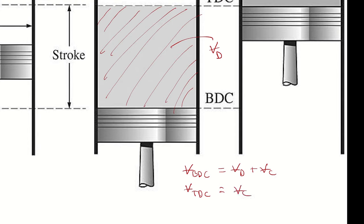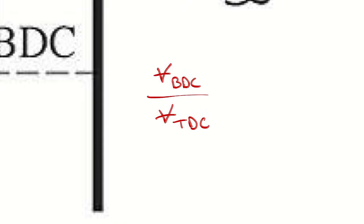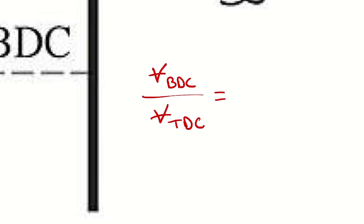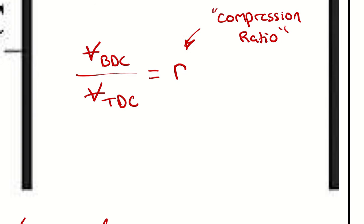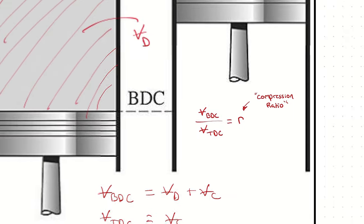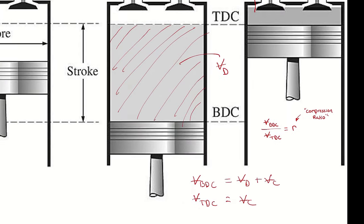A parameter that we often keep track of in reciprocating engines is the proportion of volume at bottom dead center to volume at top dead center. This gets a special name: the compression ratio, abbreviated with the letter R. The compression ratio represents the proportion of volume at its largest to its smallest.